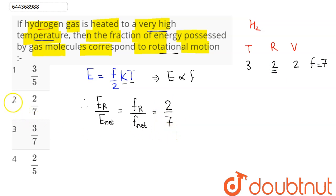So 2 by 7 means option number 2 is the correct answer. The fraction of energy possessed by gas molecules corresponding to rotational motion is 2 by 7, which is option number 2. Hence 2 is the correct answer.